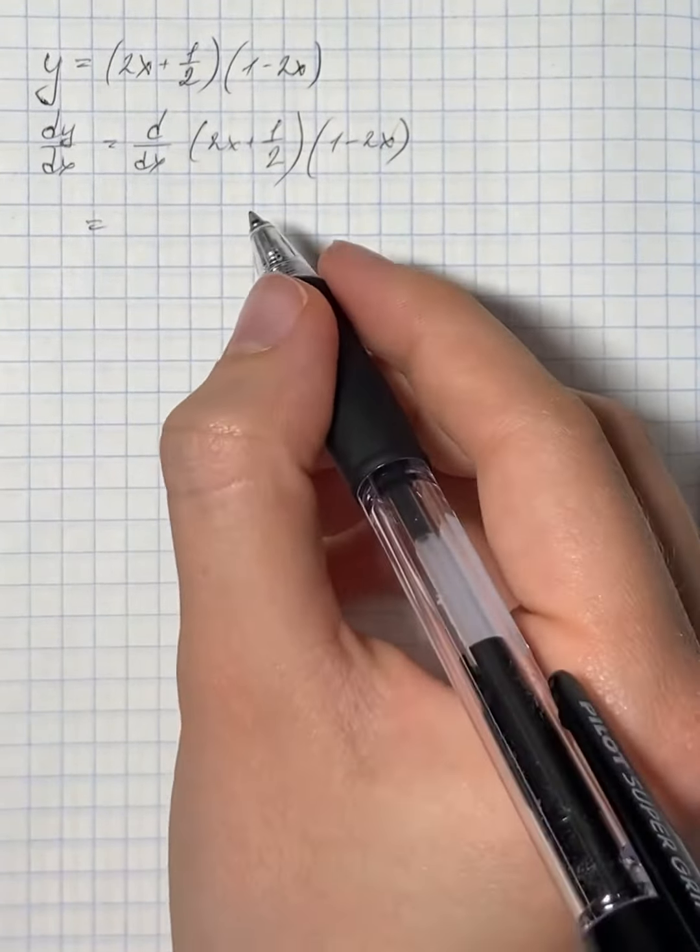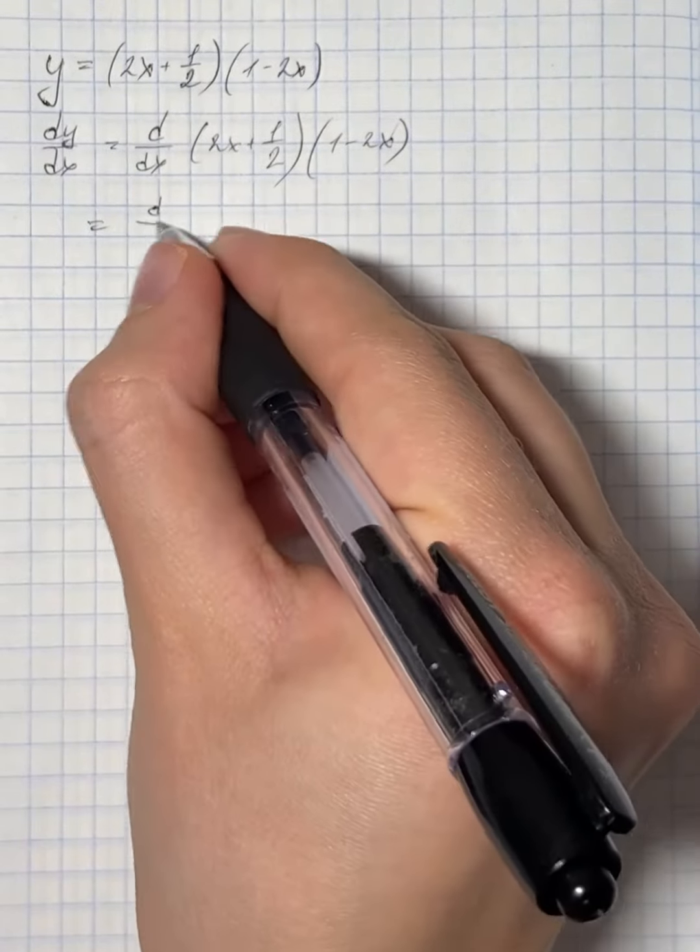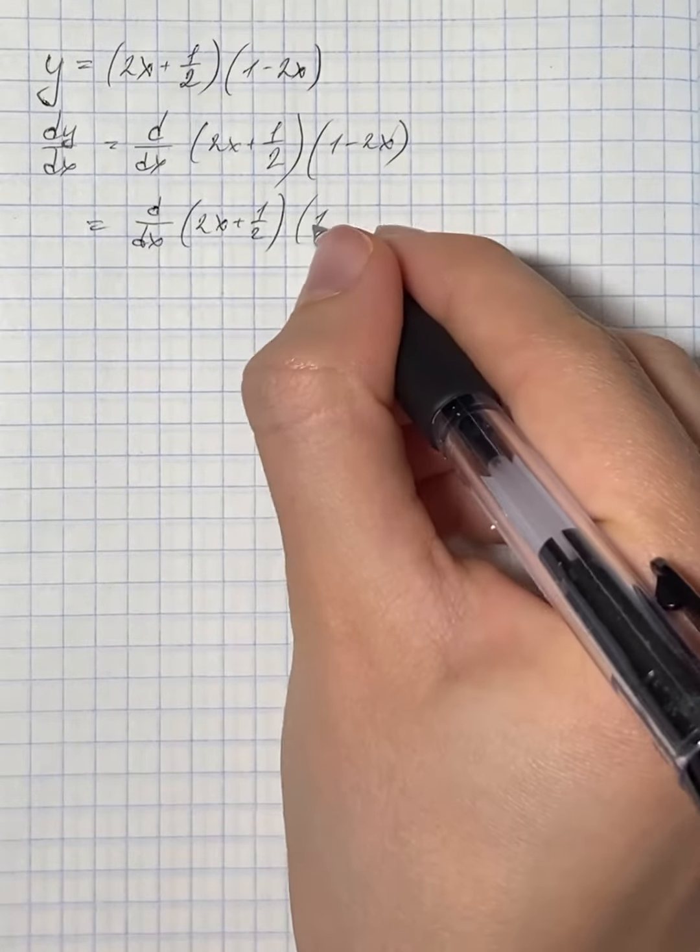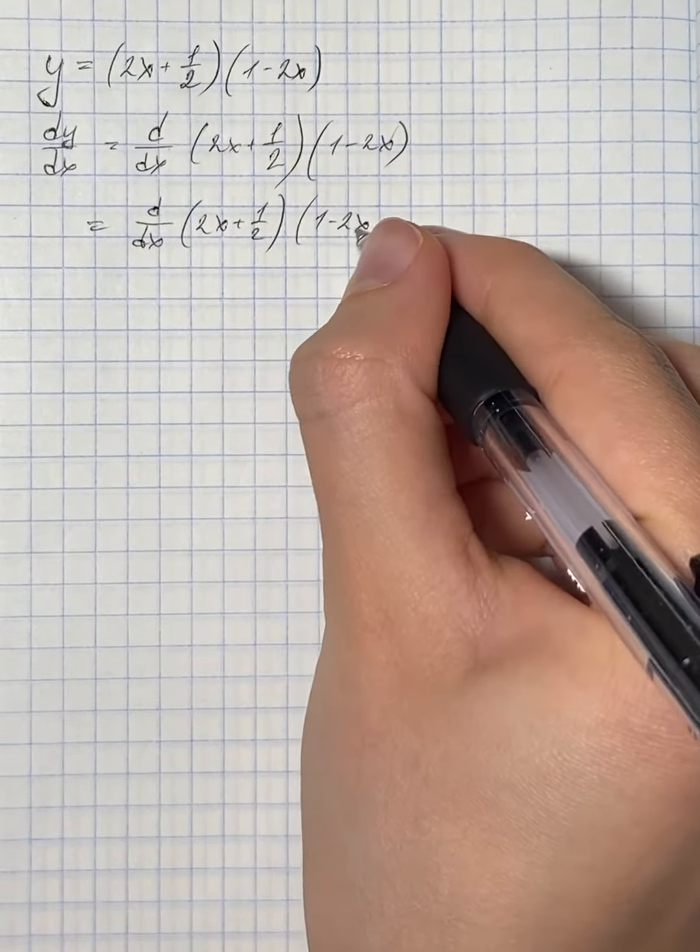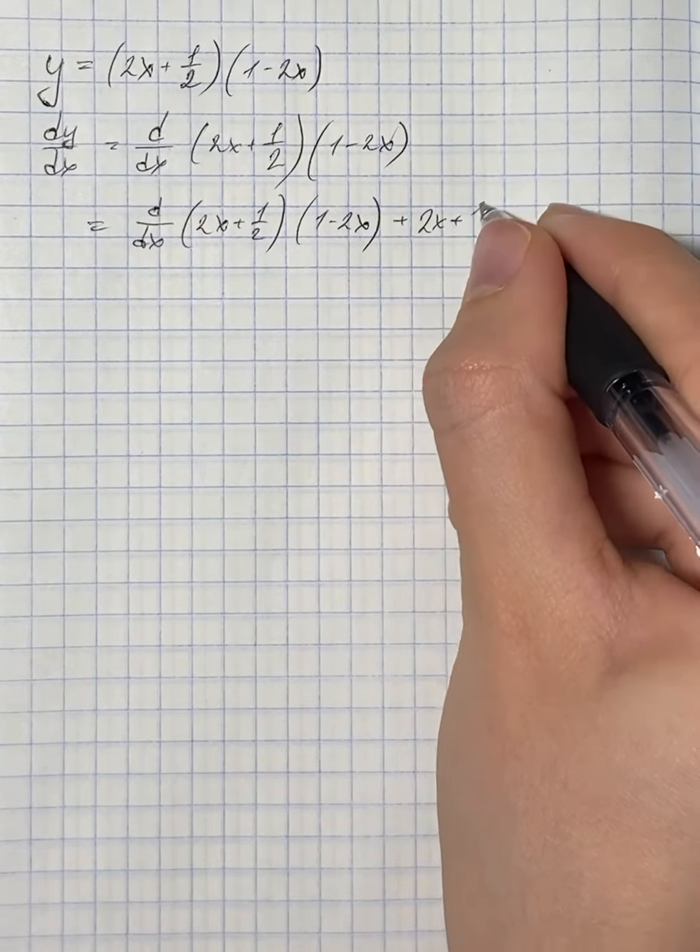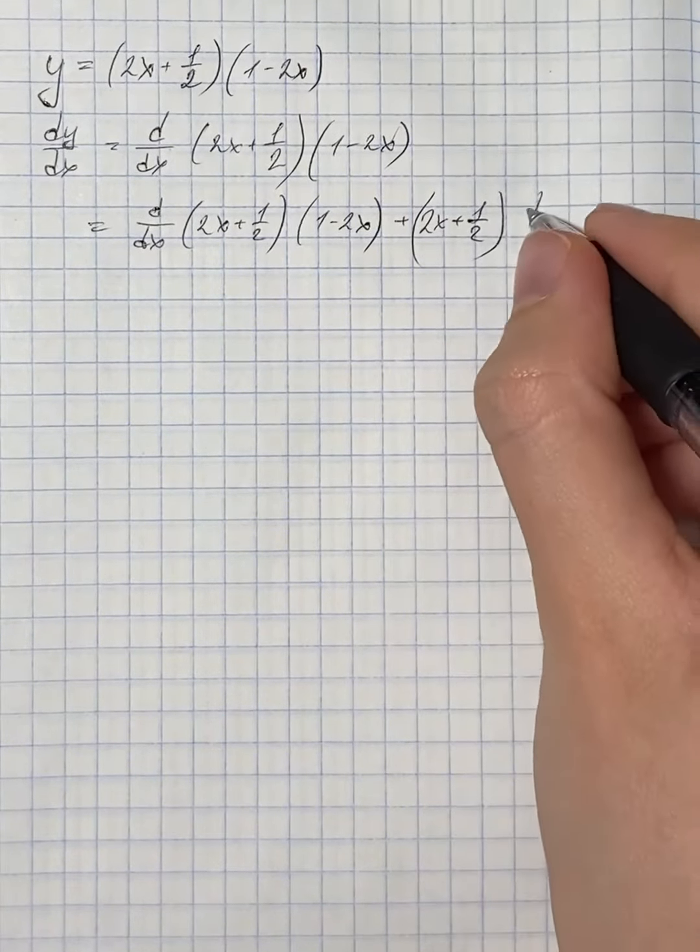The product rule says you need to take the derivative of the first term times the second term plus the first term times the derivative of the second term.